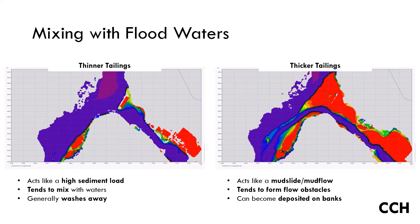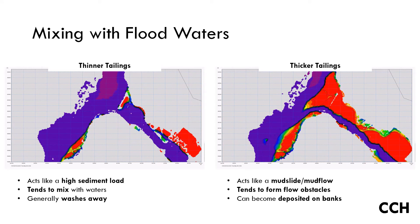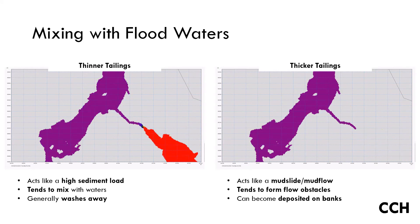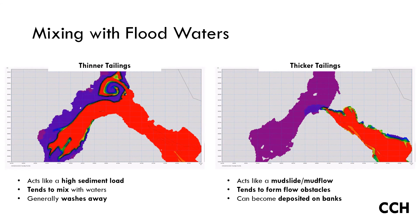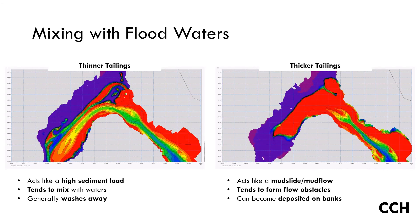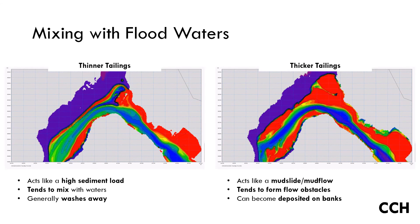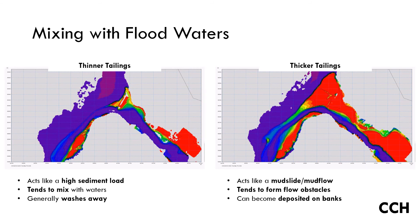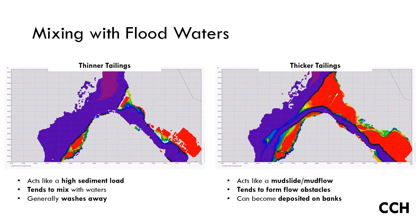The way in which the tailings mixes with the floodwaters depends on the material parameters. On the left we show a thinner, less concentrated tailings flow which does not form beaches and is easily washed away. Whereas on the right we show a thicker, more concentrated tailings flow which does cause beaches and blockages. This highlights the importance of considering the uncertainty in the material parameters.